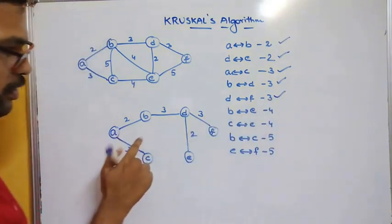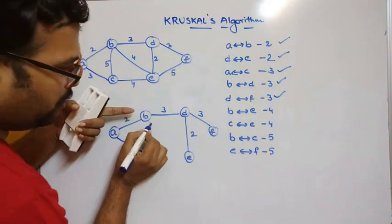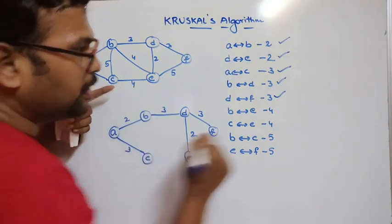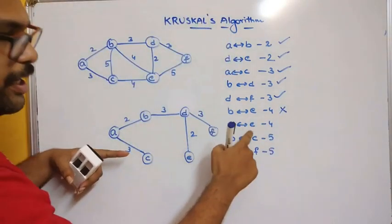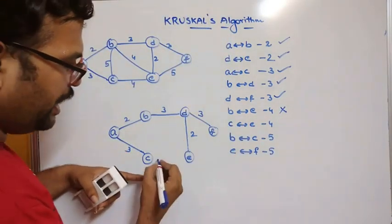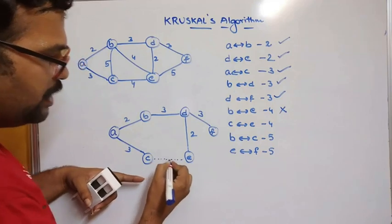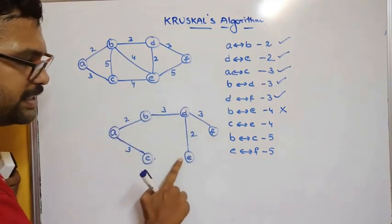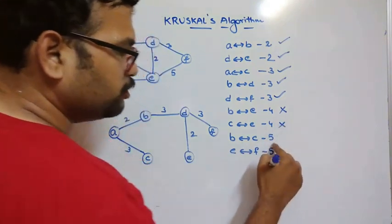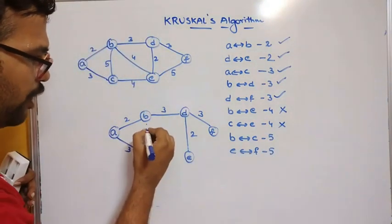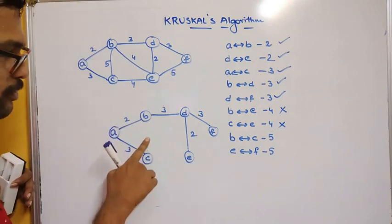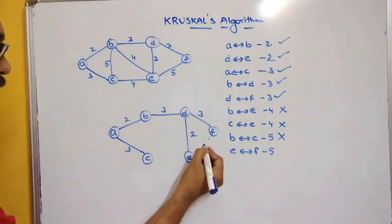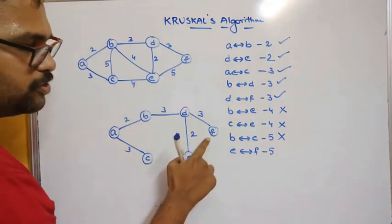Next, B to E with cost 4 — if you add this edge, it forms a cycle, so it should be rejected. C to E with cost 4 — again it forms a cycle: A, B, D, E, C, A — so reject. B to C with cost 5 — again it forms a cycle, reject. E to F with cost 5 — again it forms a cycle, reject.